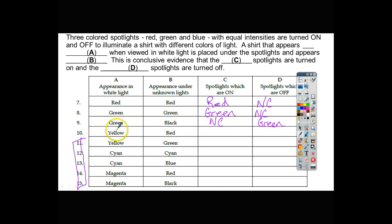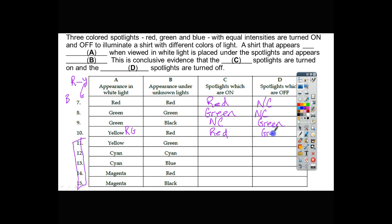For a yellow shirt appearing red under unknown lights: yellow reflects red and green, so we know R and G are in the shirt. The appearance is red, so the red spotlight must be on. The green spotlight has to be off because we don't see yellow or green in the final appearance.